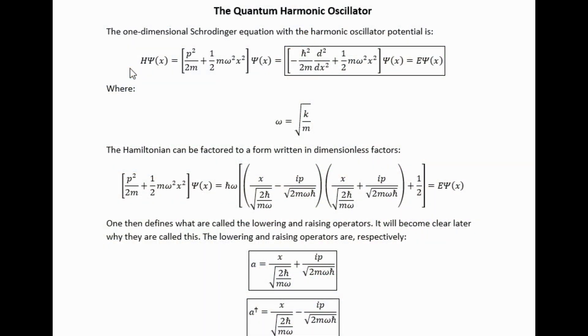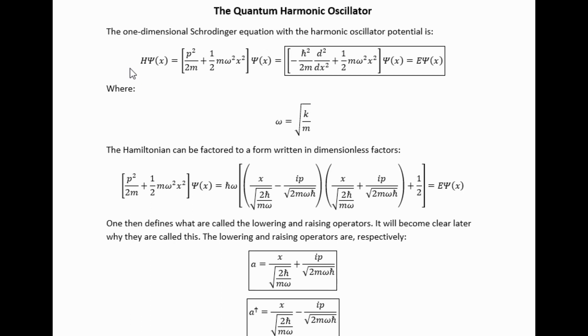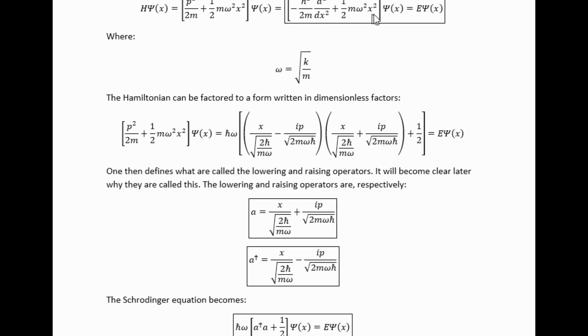So here follows the math portion where I show you the actual details of doing this problem with the operator method. We can obtain the Schrödinger equation for the quantum harmonic oscillator by simply selecting the harmonic oscillator potential for the potential we insert into the Hamiltonian. If we remember that omega is square root of the spring constant over m, then this particular selection makes perfect sense. It really is just a half kx squared.